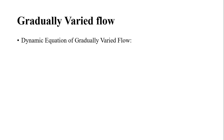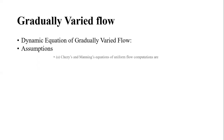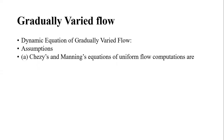For gradually varied flow, the variation in flow parameters is very small over a long spatial distance. We will derive the dynamic equation of GVF. Before that, the assumptions required for this derivation must be stated, since GVF is still a varied flow.